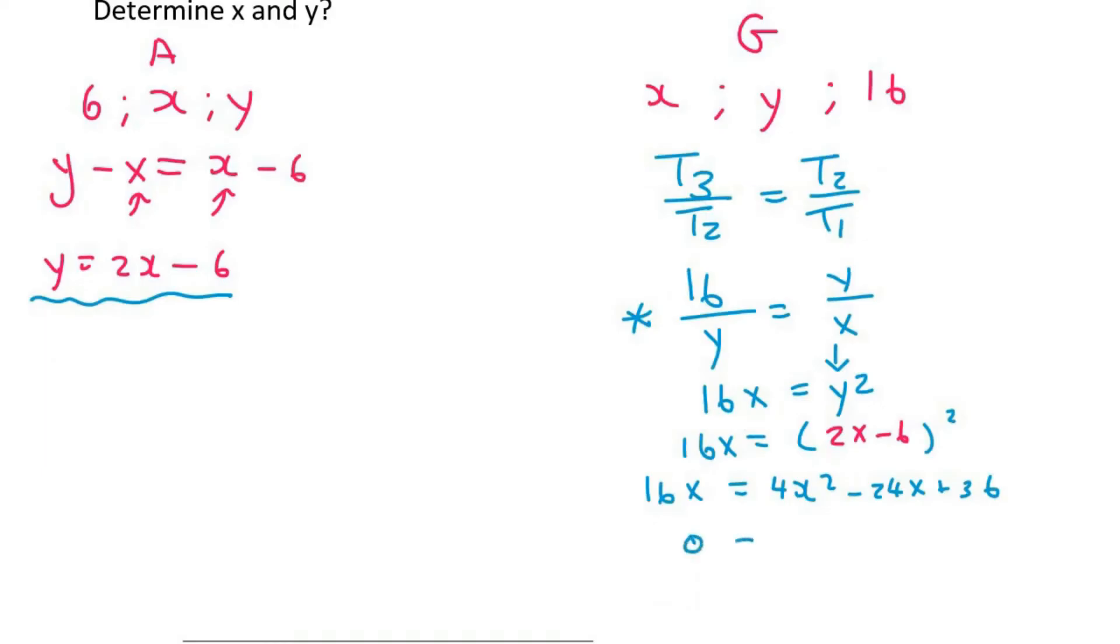Then I'm going to move everything to the right hand side. And so we're going to end up with 4x squared minus 40x plus 36. I'll use the quadratic formula there. You can try factorize if you want. I just usually go straight to the quadratic. And so x would be 9 or 1.